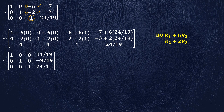Note that this form is reduced echelon form, so the criteria for the Gauss-Jordan method has been established. Also note that the matrix of coefficients has been transformed into the identity matrix of order 3.